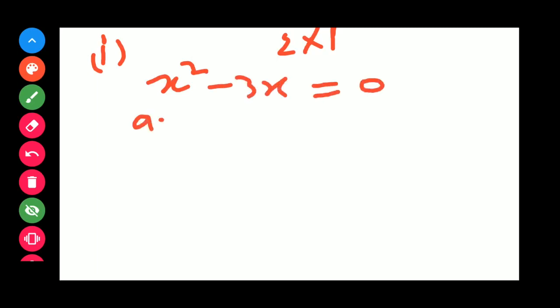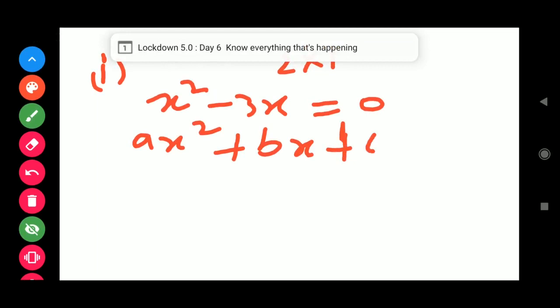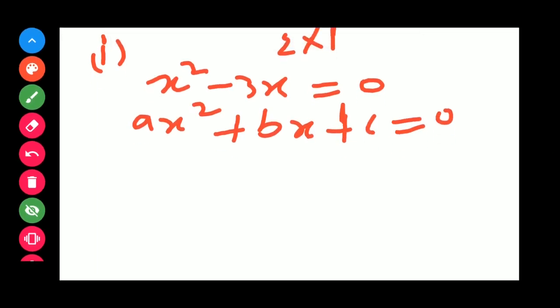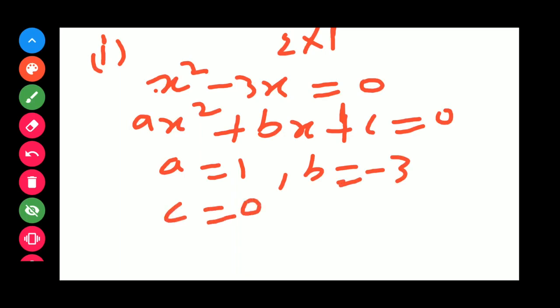Comparing x² - 3x = 0 with ax² + bx + c = 0, we get A = 1, B = -3, and C = 0. Since A is not equal to 0, it is a quadratic equation. So the answer is yes.